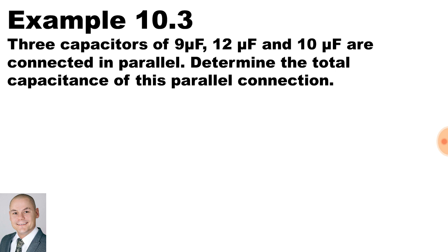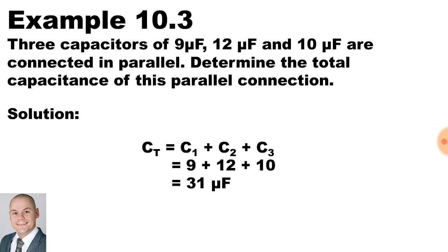Now for capacitors in parallel, the formula is similar to resistors in series. So it's going to be the total capacitance is equal to C1 plus C2 plus C3. It is 9 microfarad plus 12 microfarad plus 10 microfarad, and that gives us a total of 31 microfarad.